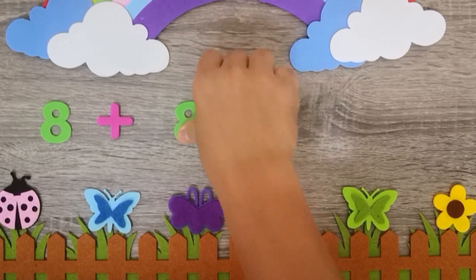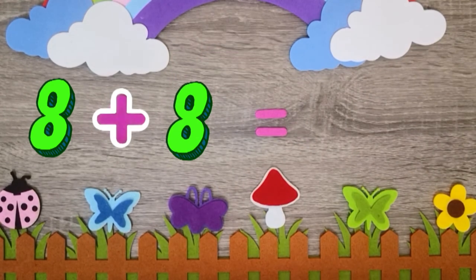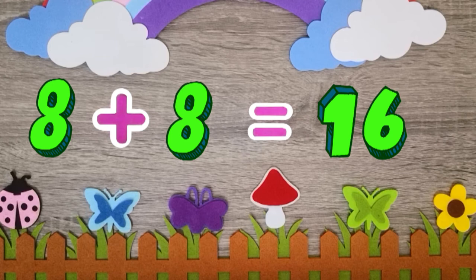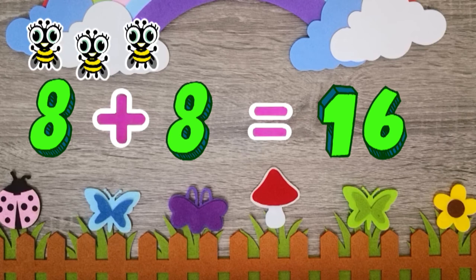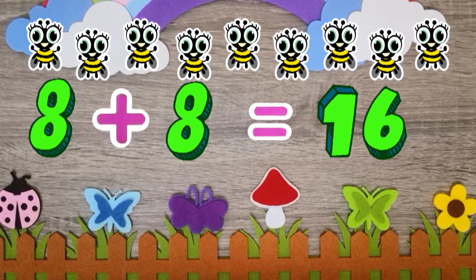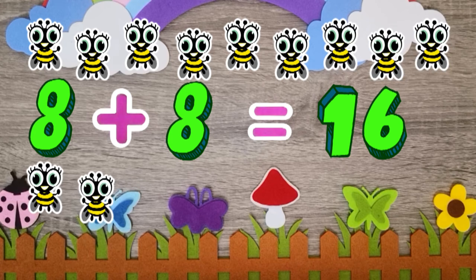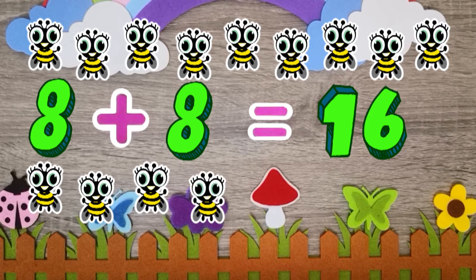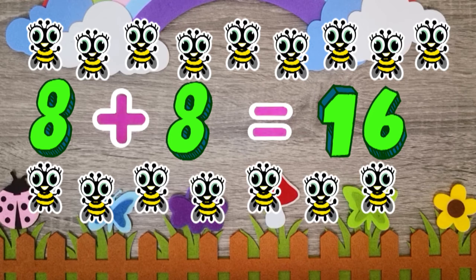8 plus 8 equals 16. 1, 2, 3, 4, 5, 6, 7, 8, 9, 10, 11, 12, 13, 14, 15, 16.